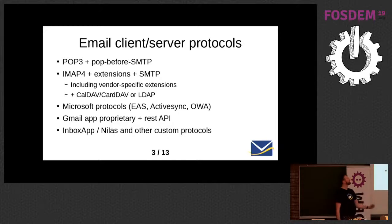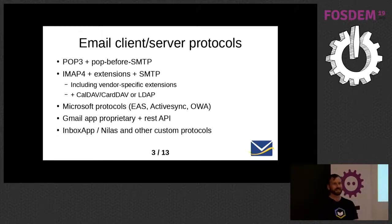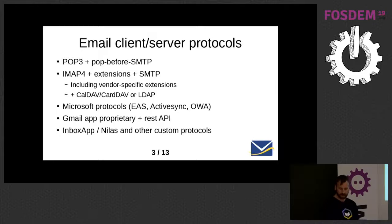This is what we have now. Not many people are using POP3 anymore. With open standards, it's pretty much IMAP plus extensions, including vendor-specific extensions, and CalDAV, LDAP, and a bunch of other standards for things that are not email. Microsoft have three protocols of their very own. Gmail have their own proprietary protocol. There's a bunch of custom protocols for accessing email because IMAP is kind of miserable to use in today's world.